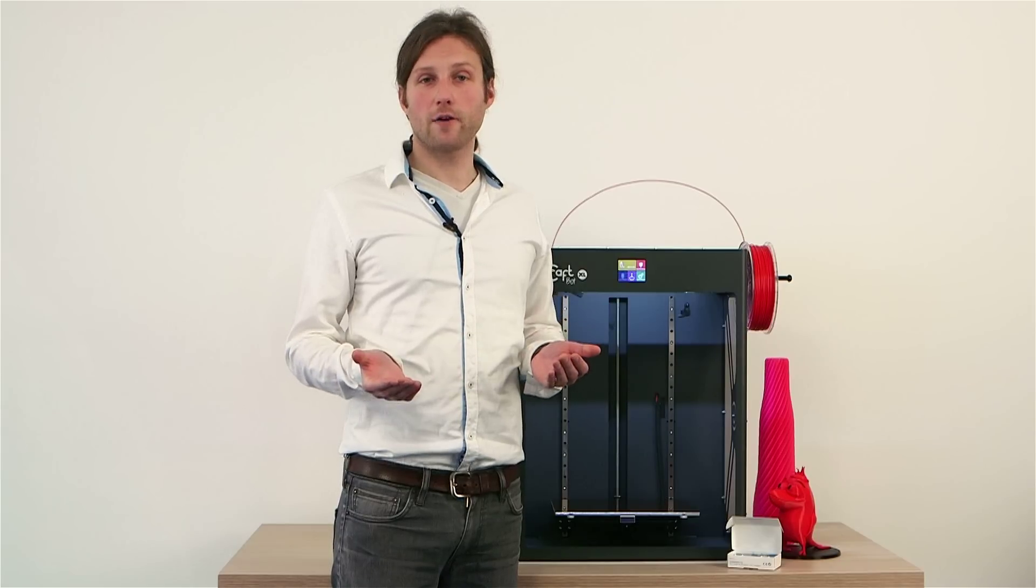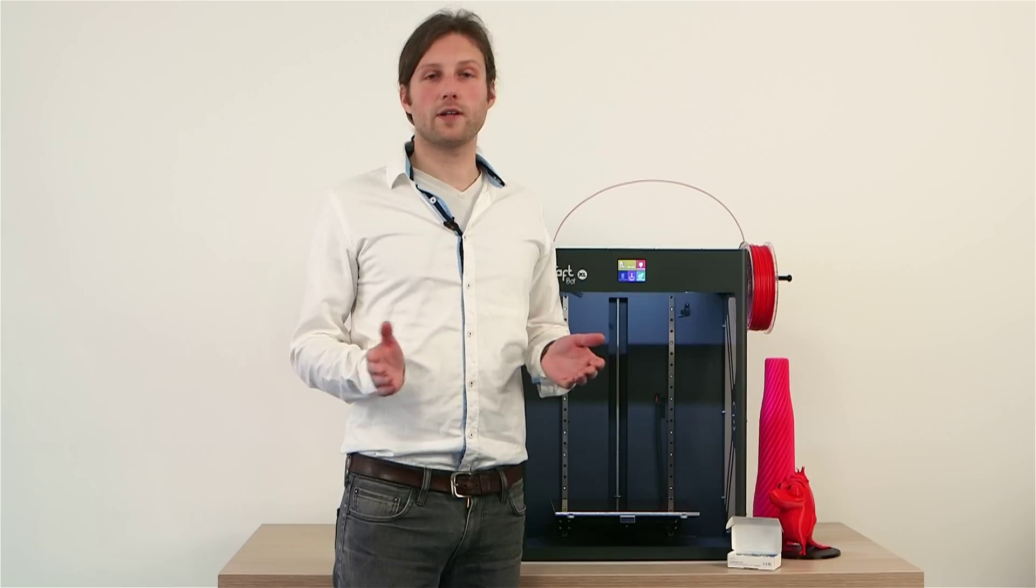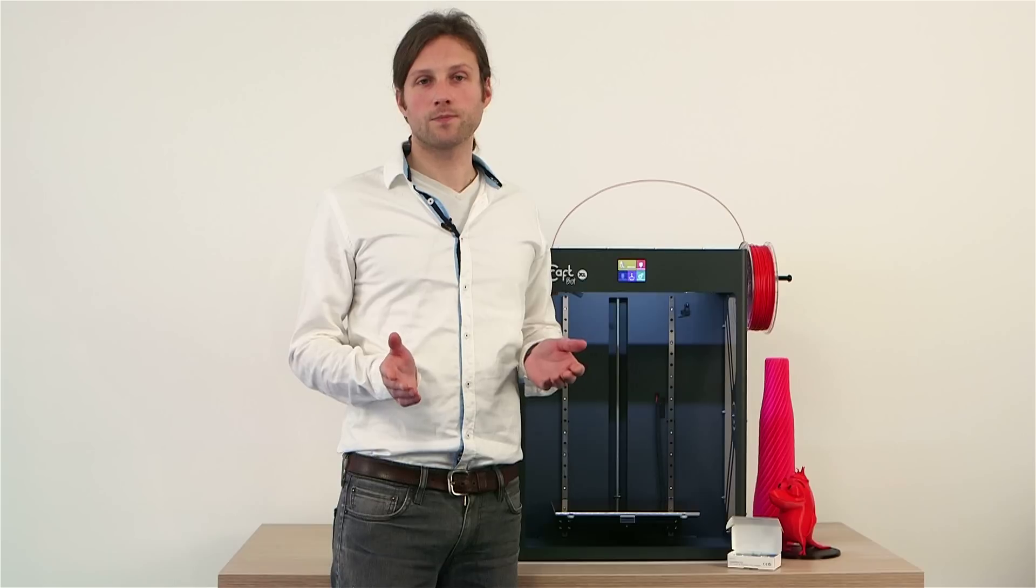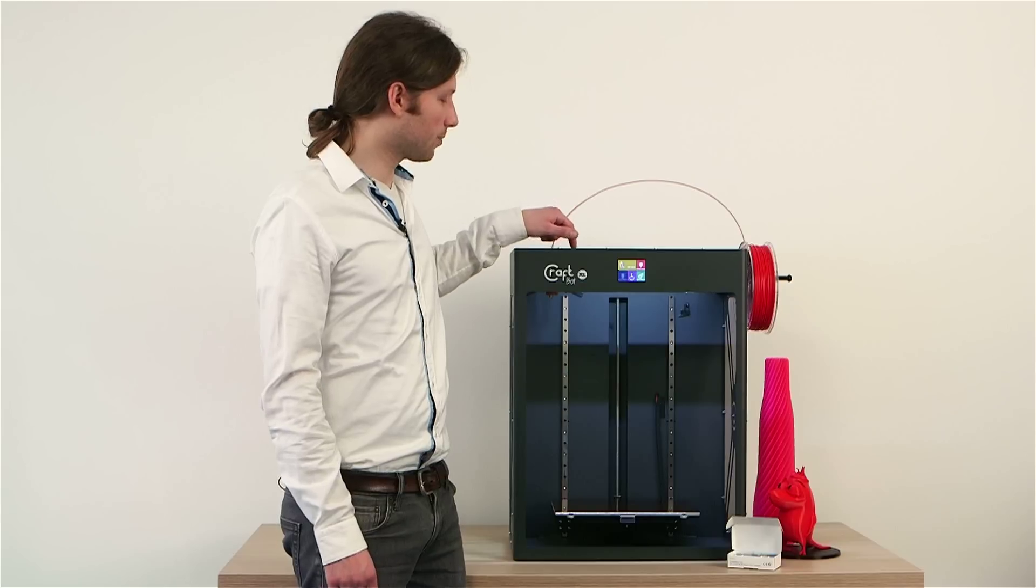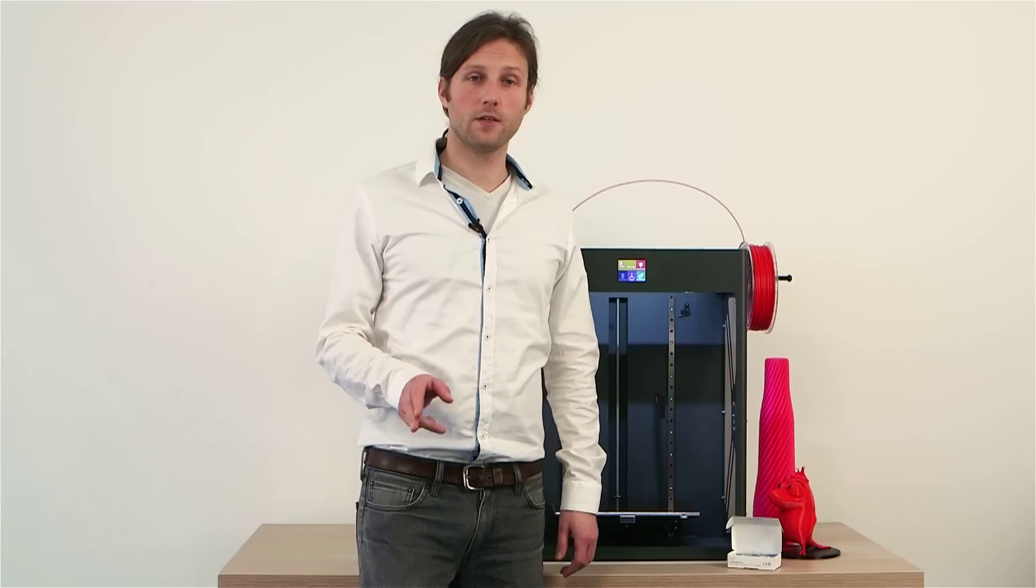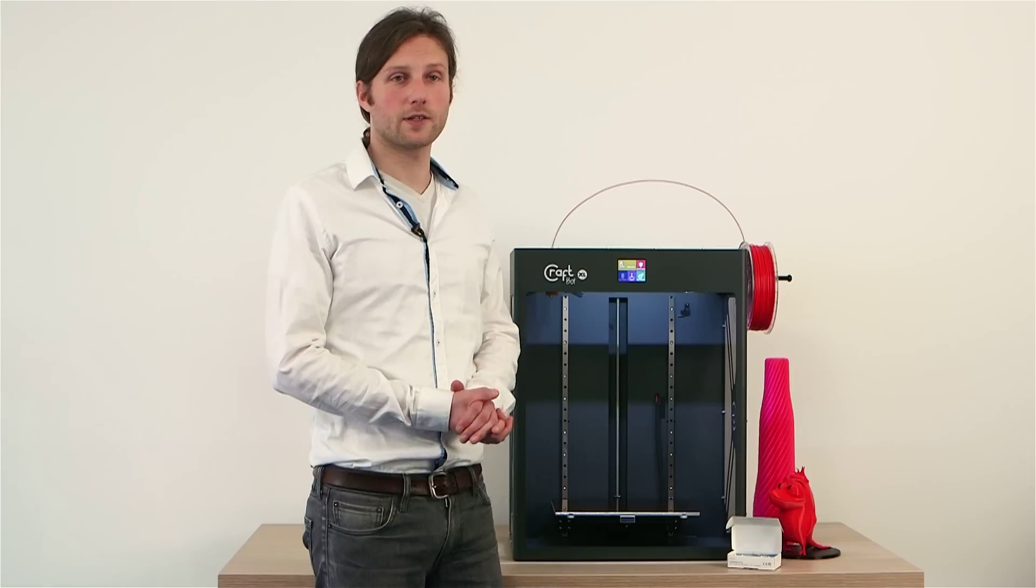If there's a power outage, say all the power goes out and you normally lose your whole print and all the hours of work you put into it. With the CraftBot, the machine actually remembers the exact point where the power outage happened, and you can resume at a later time. You can save a lot of hours by doing this.